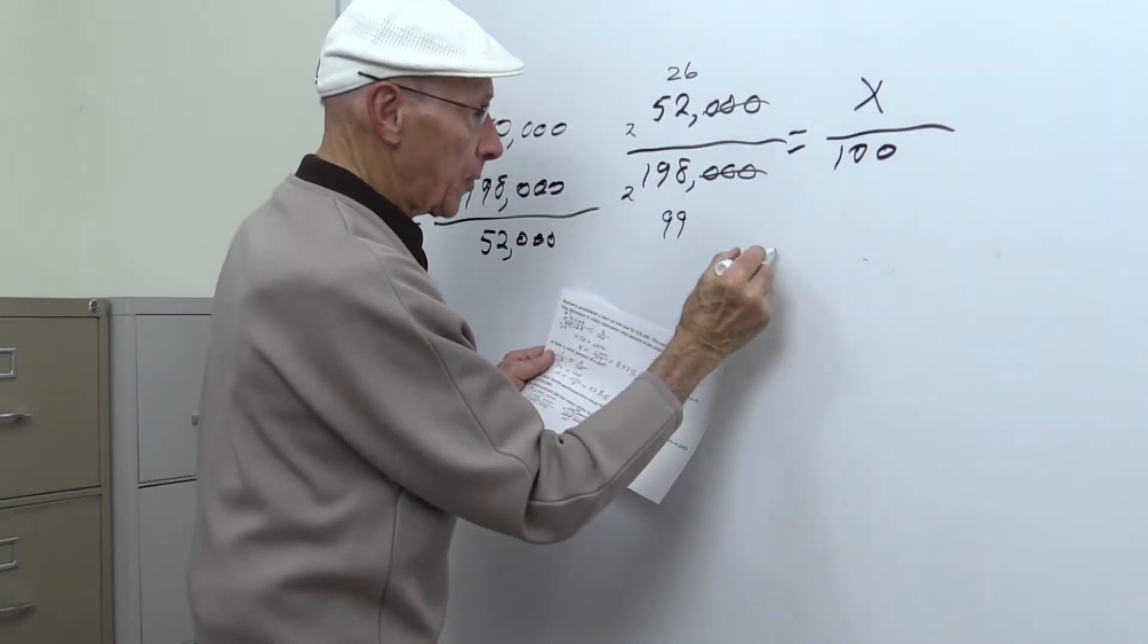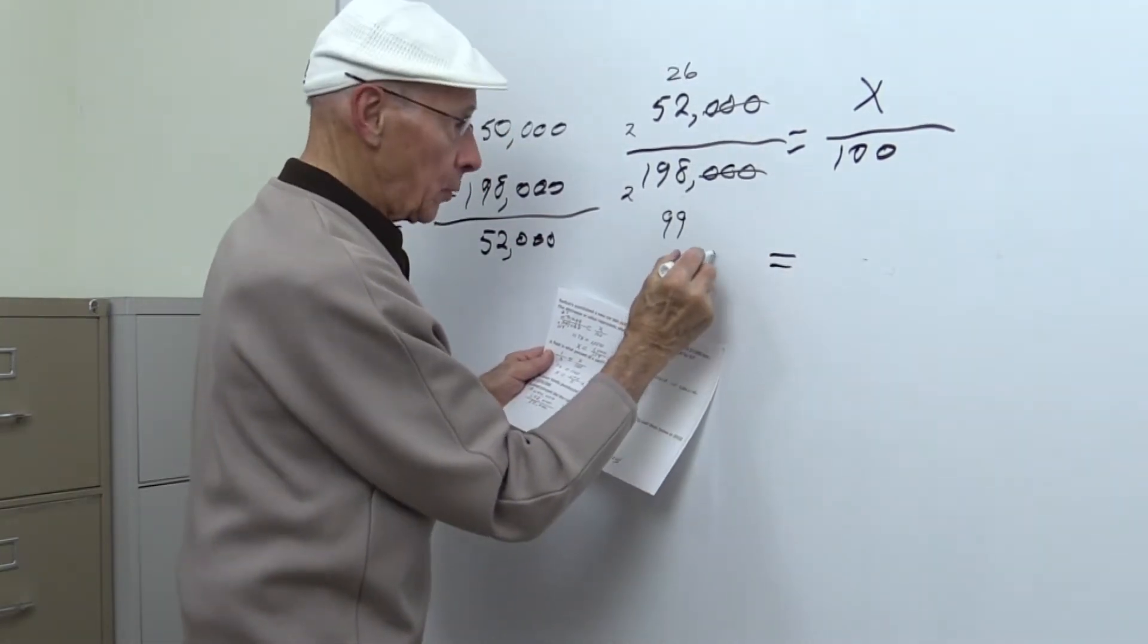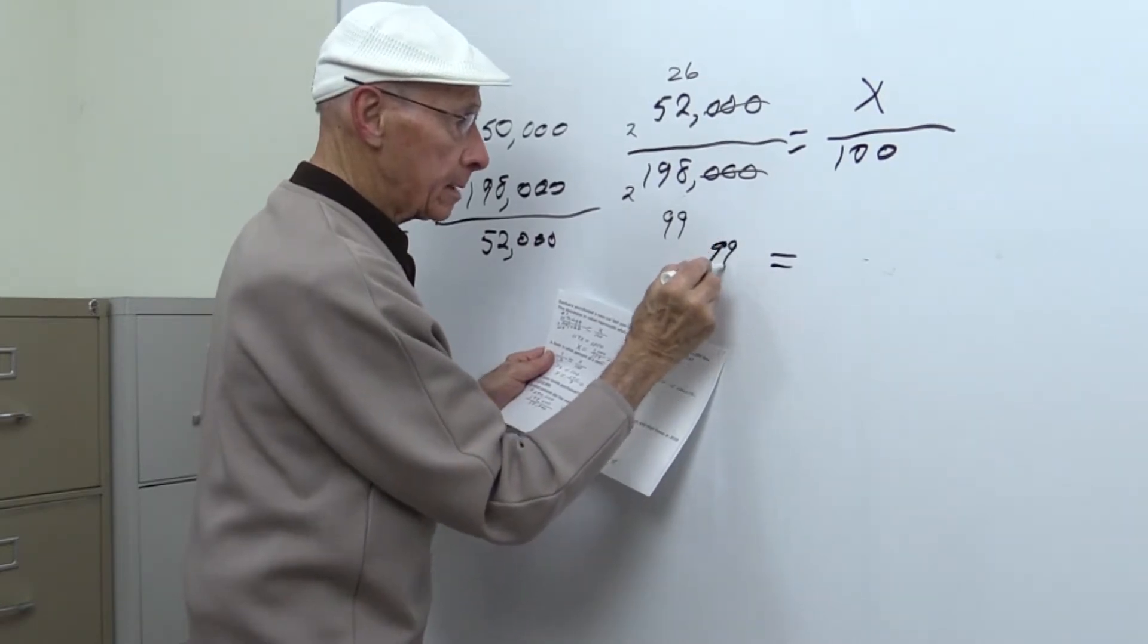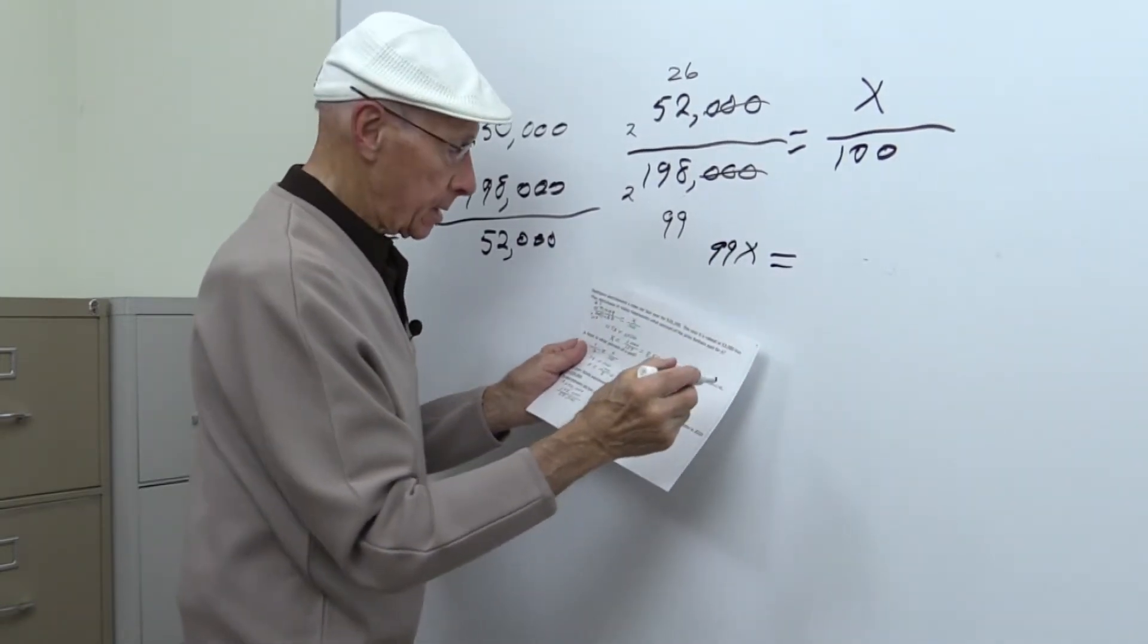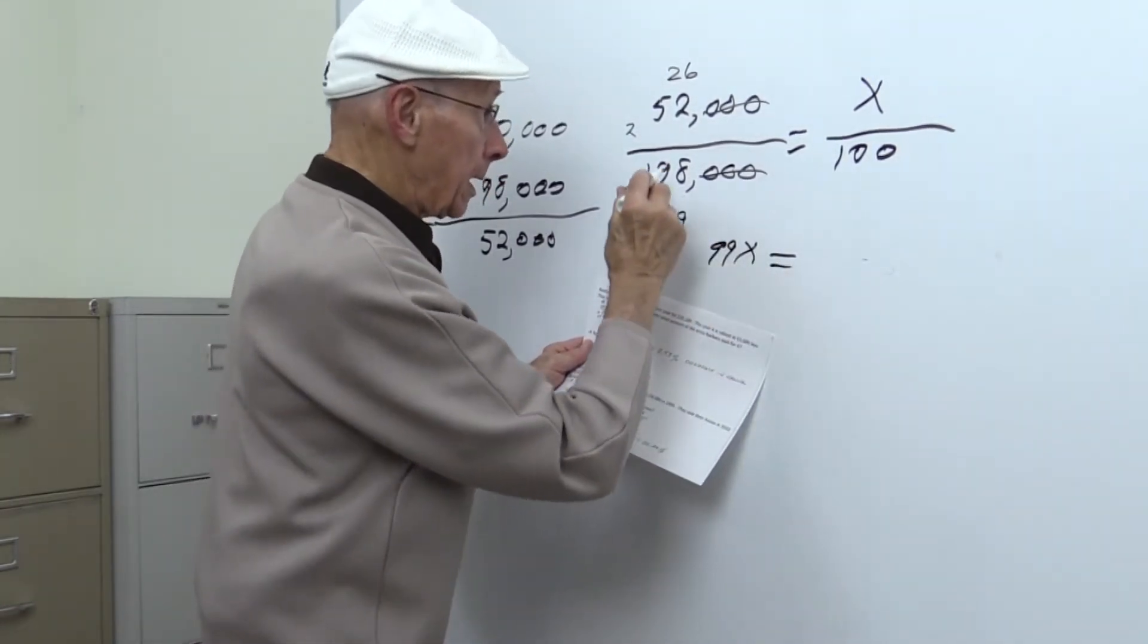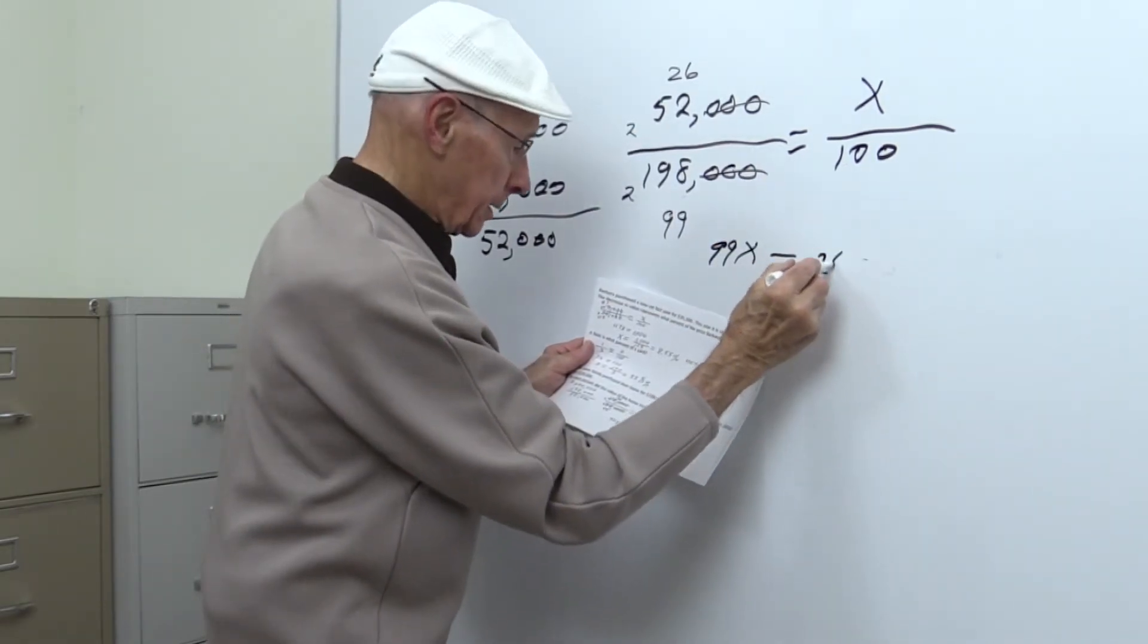So if we cross multiply, we have 99x. 26 times 100 is 2600.